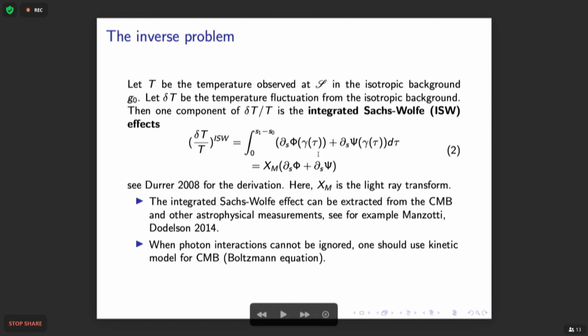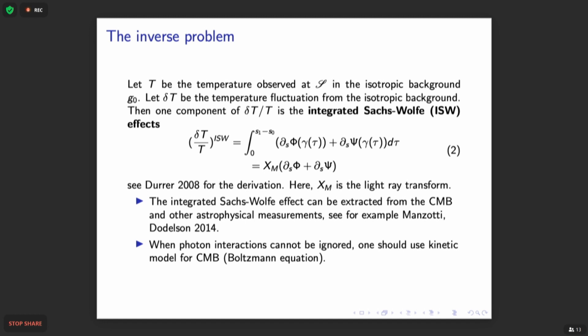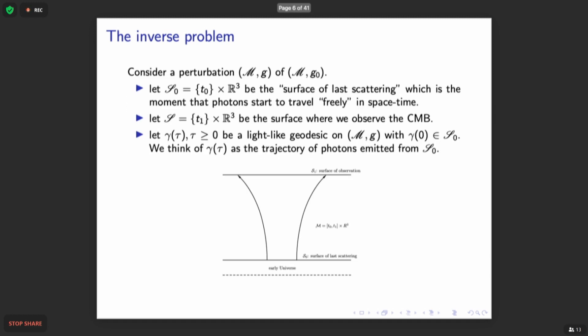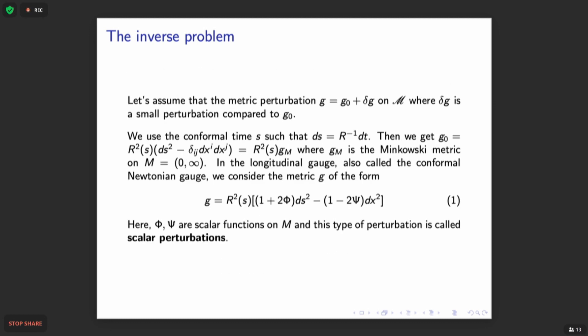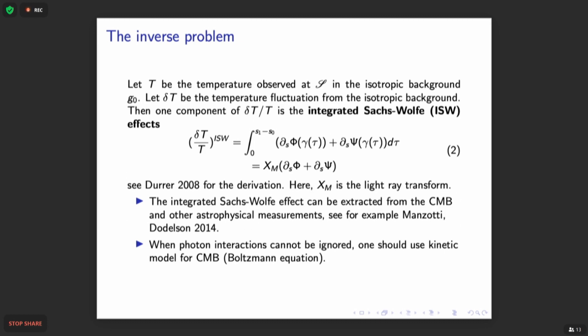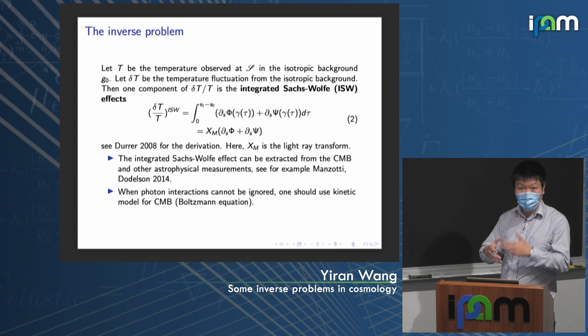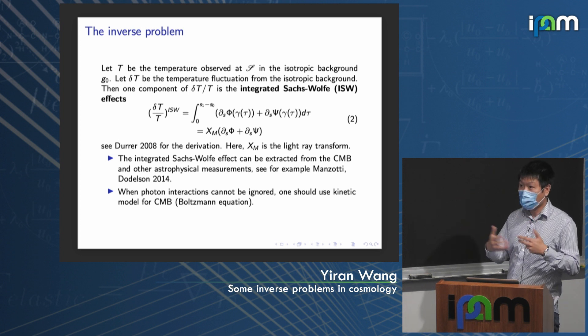The derivation of the integrated Sachs-Wolfe effect can be found in textbooks like Dodelson's. It is derived by considering first-order linear perturbation. I denote this integral transform by Xm — I call it the light-ray transform because you integrate the function along light-like geodesics, over all possible geodesics. In practice, we assume the CMB can be measured on the whole Cauchy surface S₁. While in reality one can only measure along the world line of the satellite, this is defensible on the basis of the Copernican principle — there is no privileged observer. So we consider the full data problem.